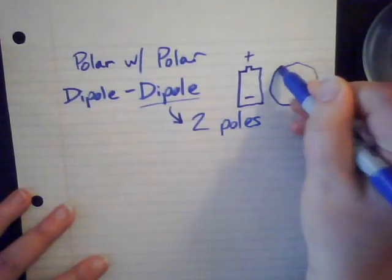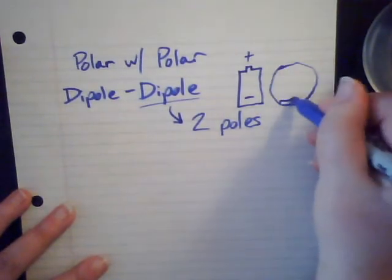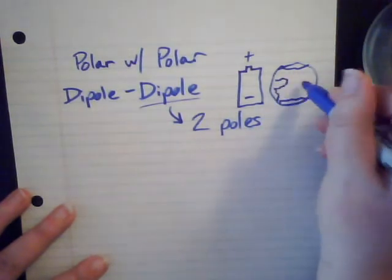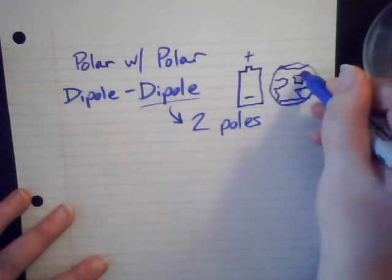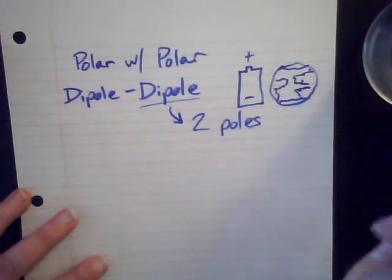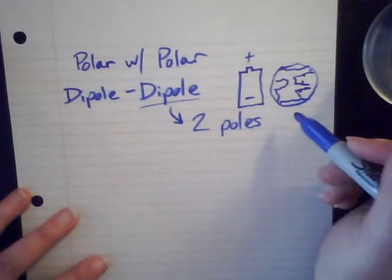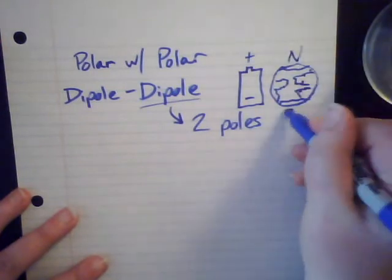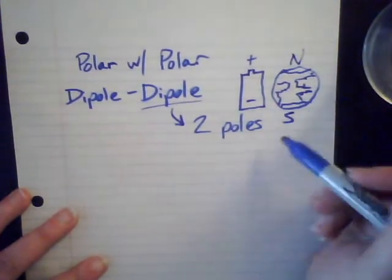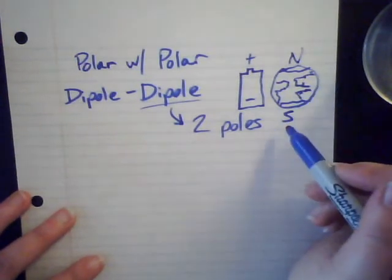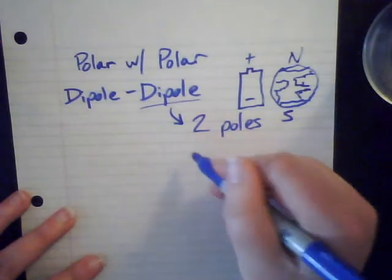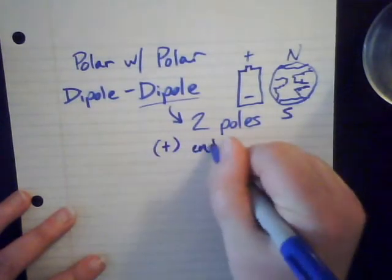Or think about it like the poles of the Earth — we have a North Pole and a South Pole, so we have two poles, a dipole, on the Earth as well. The same thing with our molecule: two poles means we have a positive end and a negative end.